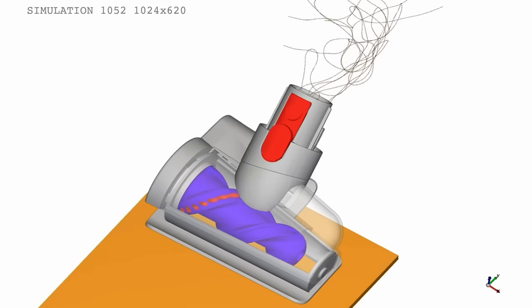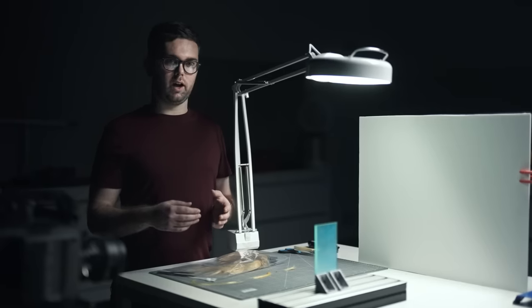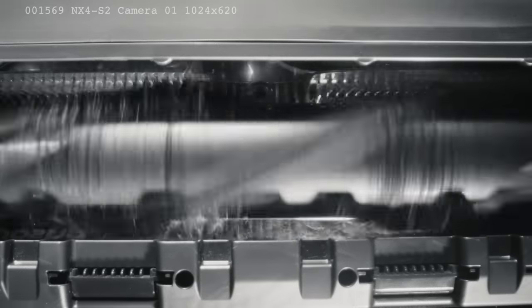In the simulations we can see things that we can't see in physical testing. Your brush bar is spinning at three to four thousand rpm and you can't see that with the naked eye.